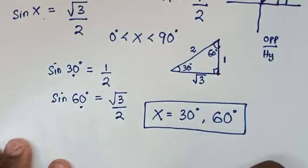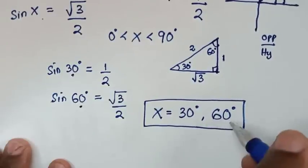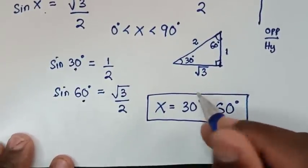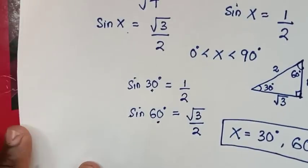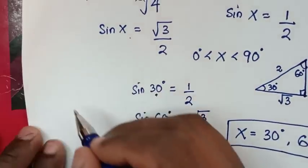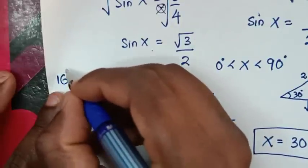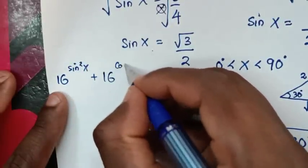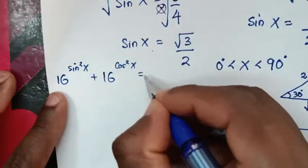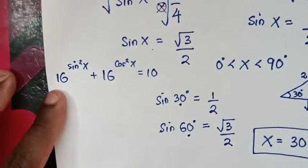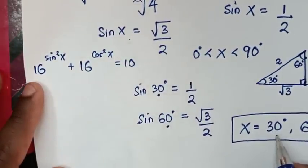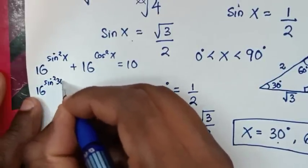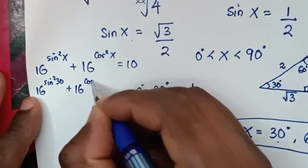Now to check if these values of x are correct, let's verify for x equals 30 degrees. From our problem, 16 power of sin squared x plus 16 power of cos squared x equals 10. Using angle 30: it becomes 16 power of sin squared 30 plus 16 power of cos squared 30.